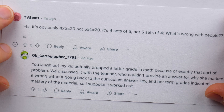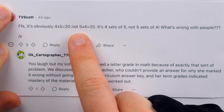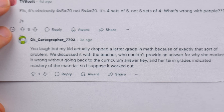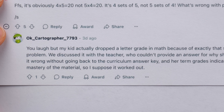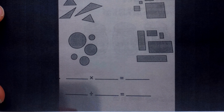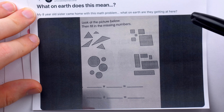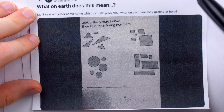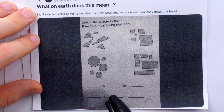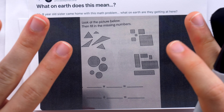Even in my purported solution, there's some potential ambiguity with the ordering. TV Scott says it's obviously four times five equals 20, not five times four equals 20 — it's four sets of five, not five sets of four. We get a dark reply: my kid actually dropped a letter grade in math because of exactly that sort of problem. That is diabolical. I don't think that potential ambiguity is really an issue though. A math problem doesn't have to be completely unambiguous to be a good problem — often some ambiguity is intentional to spark discussion. Either ordering would probably receive full credit if those are the intended solutions.